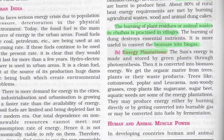Energy plantations: The sun's energy is captured and stored by green plants through photosynthesis and converted into biomass energy. We get organic matter from trees, plants, and their waste products. Trees like cottonwood, poplar, and leucaena are examples of energy plantations. They may produce energy either by burning directly, by being converted into burnable gas, or by being converted into fuels through fermentation.